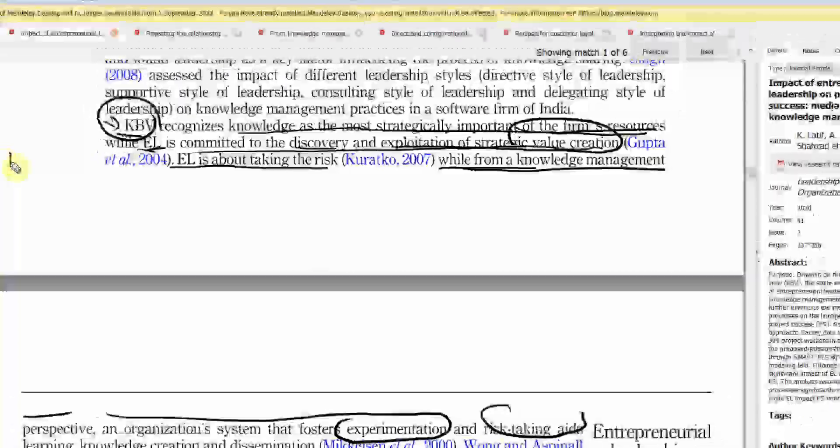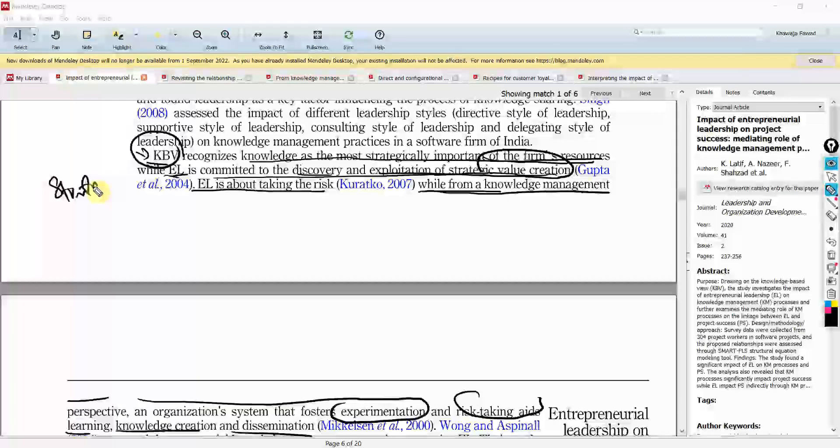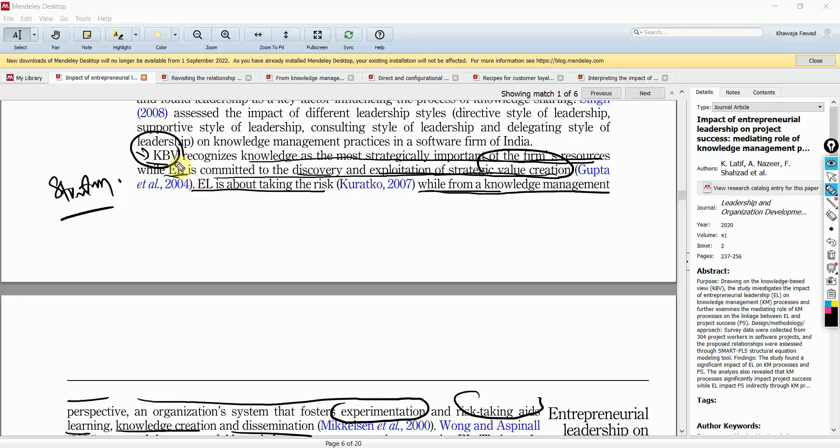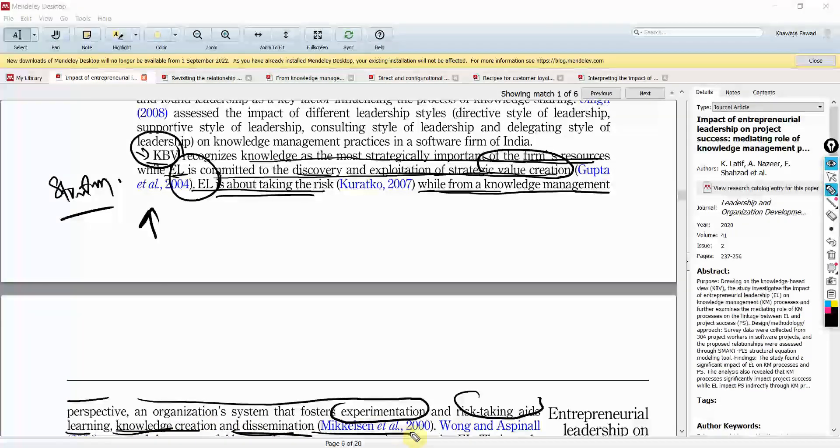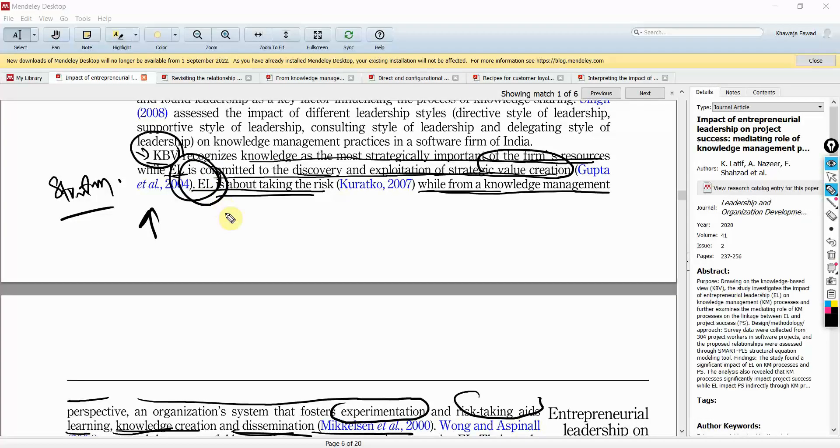While EL is committed to discovery and exploitation of strategic value creation. Now, here the link is developed based on strategy or how these concepts can improve the organization's strategic value creation. So, EL is about taking risk and it can help obviously in knowledge creation and dissemination based on this reference. So, the elements of EL are linked to knowledge management based on knowledge-based view.